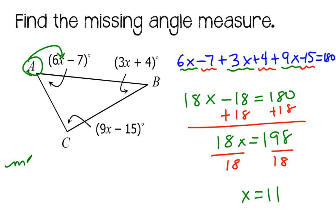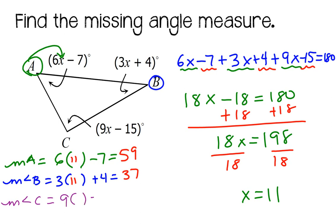The measure of angle A is equal to 6 times x minus 7. And if x is 11, then angle A is 6 times 11 minus 7, which is 59 degrees. And the measure of angle B, which is over here, would be 3 times x plus 4. And if x is 11, then we're going to get 33 plus 4. And the third one is the measure of angle C. And that would be 9 times x minus 15. And if x is 11, then we're going to get 9 times 11 minus 15, which is 84 degrees.